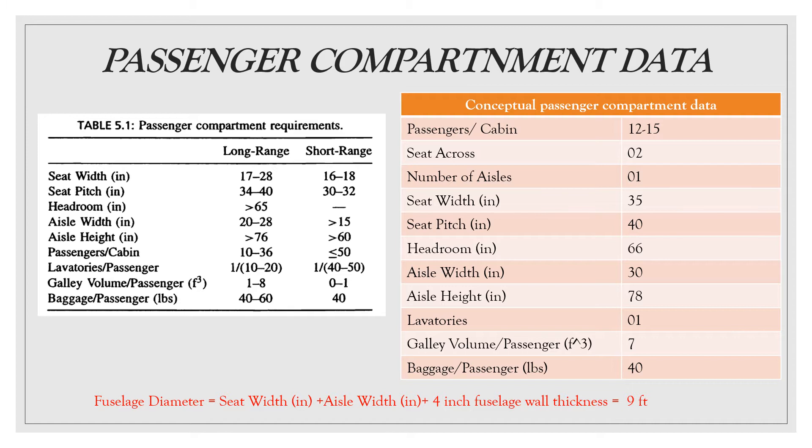The passenger compartment data, as you can see from the table, using the range from literature survey, the conceptual passenger compartment data has been estimated. The passenger compartment was designed to comfortably seat 12 to 15 passengers. The diameter of the fuselage was based on having two seats that are separated by a center aisle.